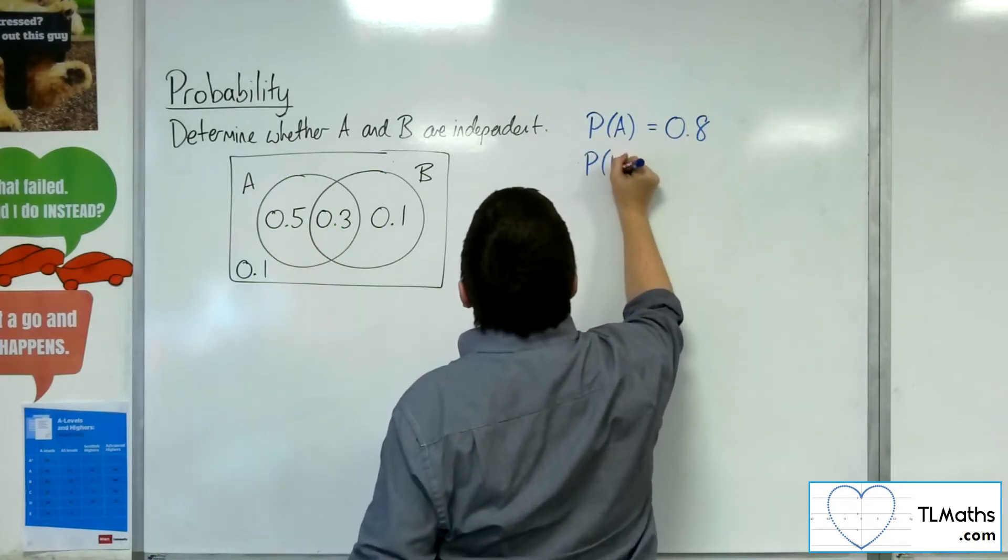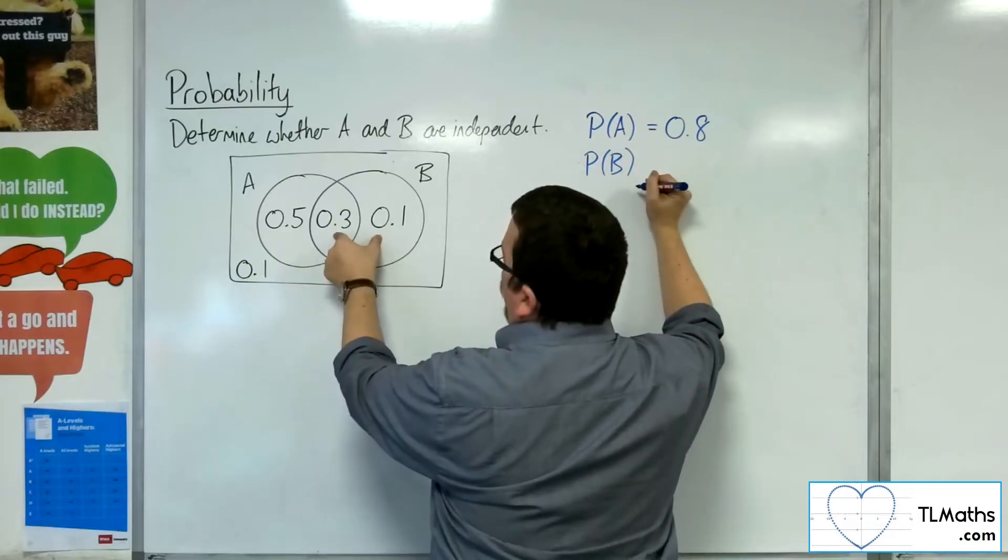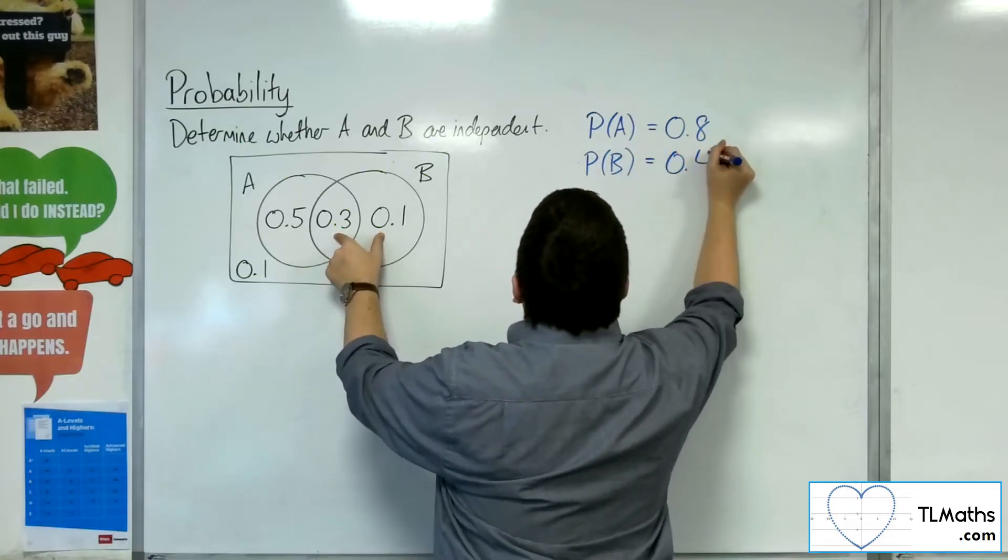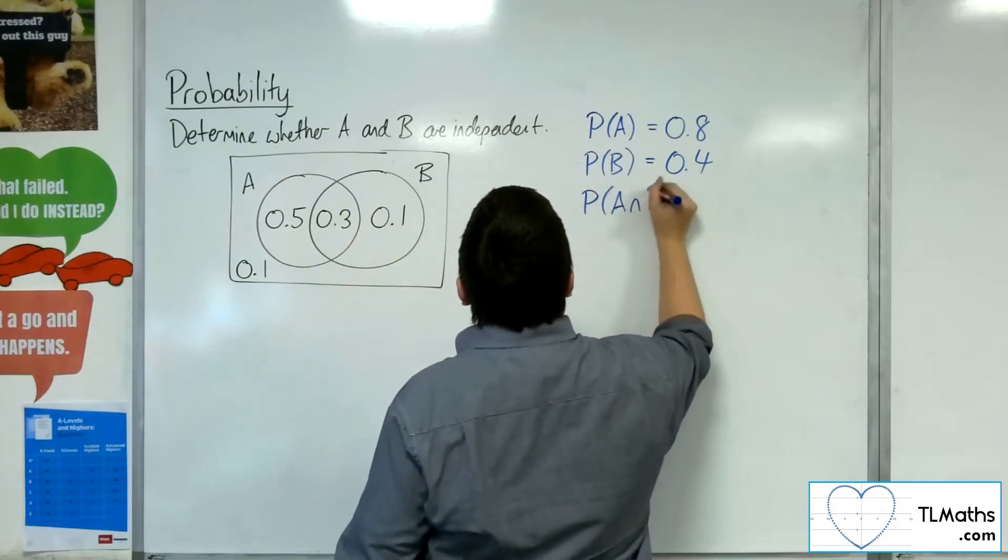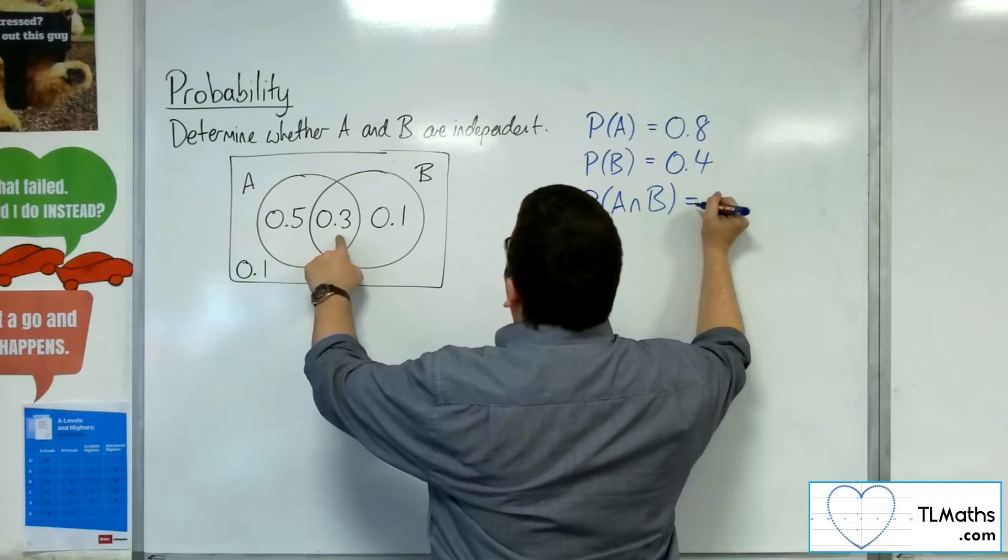The probability of B is 0.3 plus 0.1, so 0.4. And I can also read off that the intersection is 0.3.